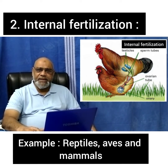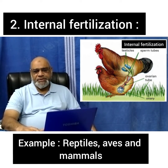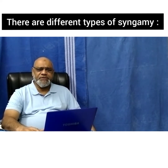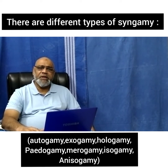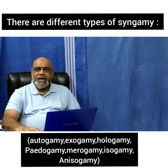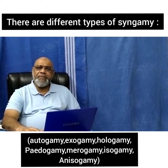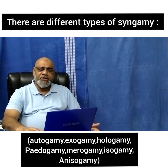Internal fertilization commonly occurs in reptiles, aves, and mammals. Now, coming to syngamy, there are different types: autogamy, exogamy, hologamy, paedogamy, merogamy, isogamy, and anisogamy. We will discuss each one in detail.